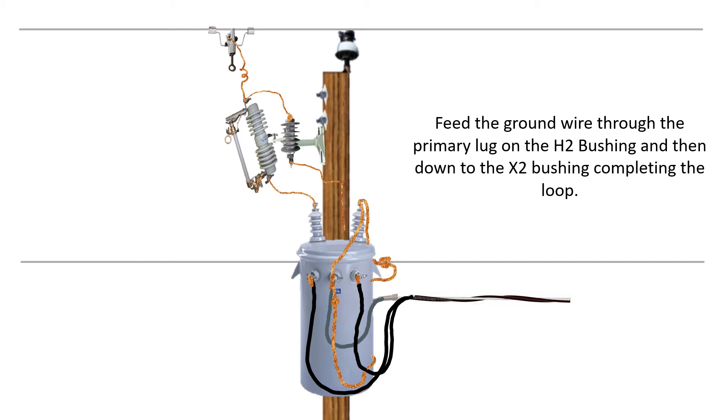Just like we did with the ground loops on a single bushing transformer. We started, we went down, around, two connections up the system ground on the pole. We go to the system neutral, and then we went right back to the X2.